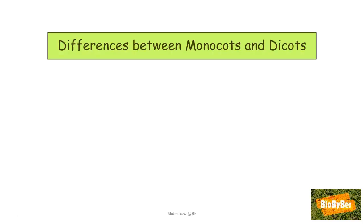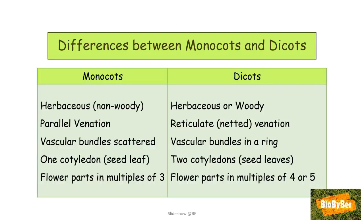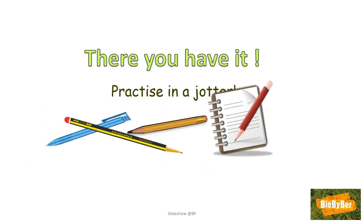To summarize the differences: monocot plants are usually herbaceous with soft stems, whereas dicot plants can be herbaceous or woody. Monocots have parallel venation in their leaves; dicots have reticulate or netted venation. In monocots the vascular bundles are scattered; in dicots they are arranged in a ring. Monocots usually have one cotyledon or seed leaf; dicots have two. Monocots have their floral parts in multiples of three; dicots have their floral parts in multiples of four or five.